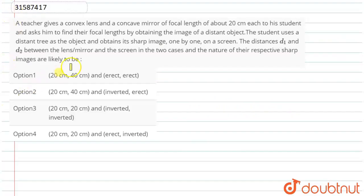Good morning students. Our teacher gave a convex lens and a concave mirror of focal length 20 cm each to his student and asked him to find the focal length by obtaining an image of a distant object.